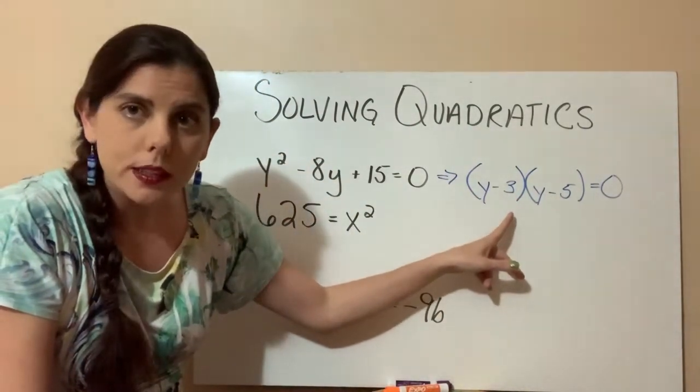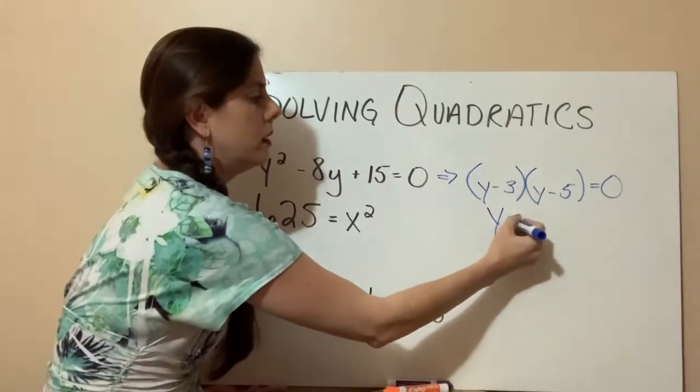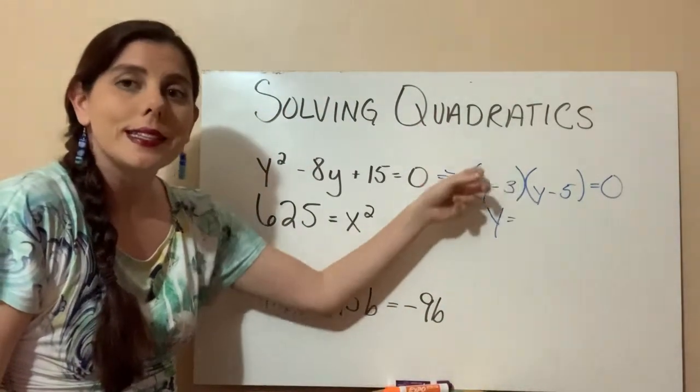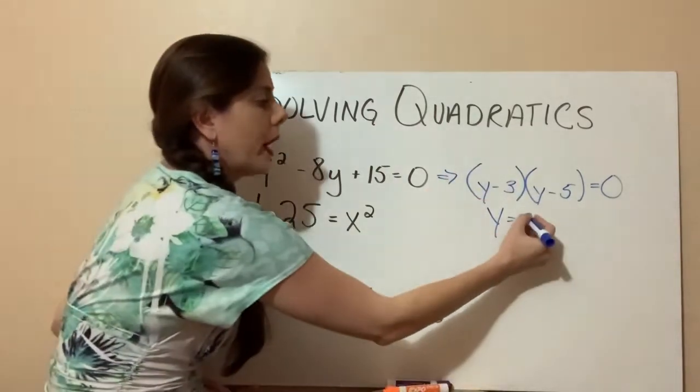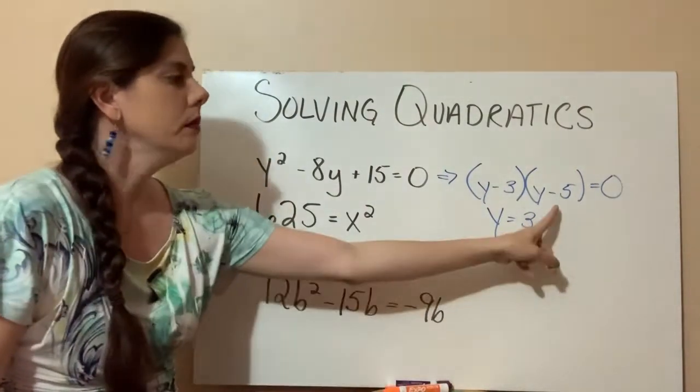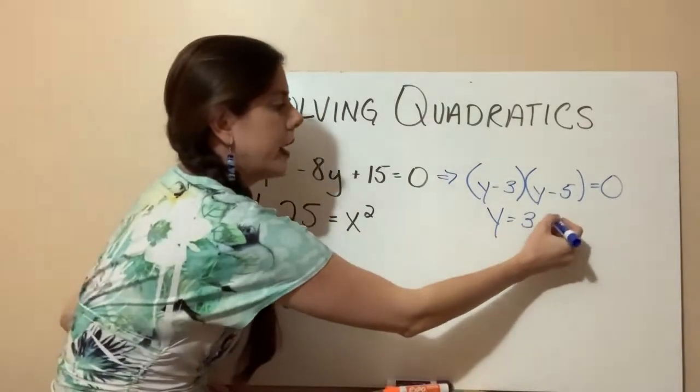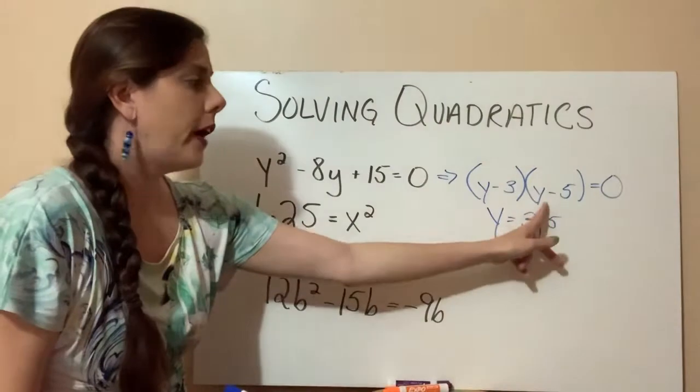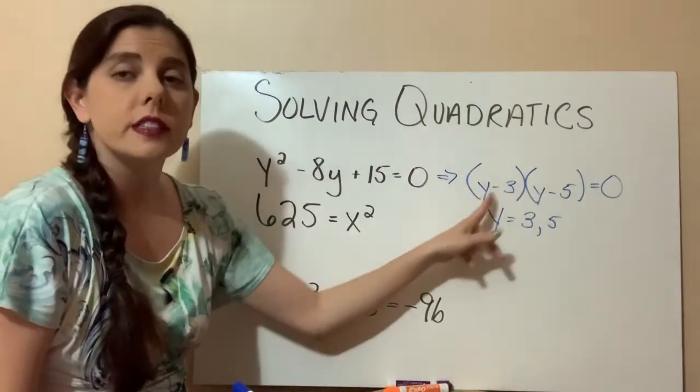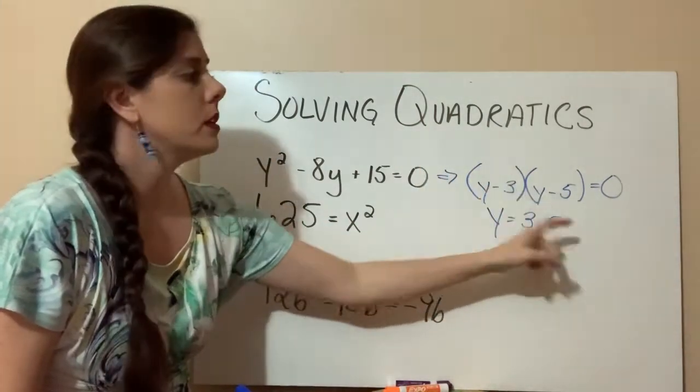So what are we doing here? We're taking the opposite of whatever the constant is. So in this example, for the first set of parentheses, y minus 3, for that set of parentheses to equal 0, we would have to have y equals 3. 3 minus 3 would equal 0. In our second set of parentheses, y minus 5, we would have to set y to 5. 5 minus 5 would equal 0. And as long as one of these sets of parentheses is set to 0, 0 times anything else is going to equal 0.